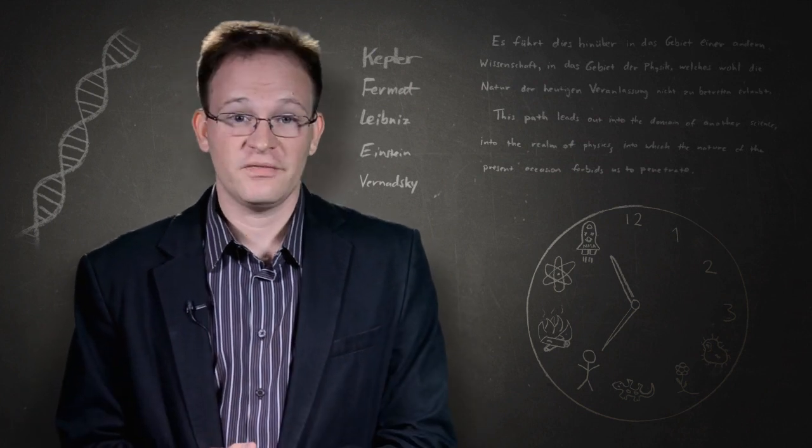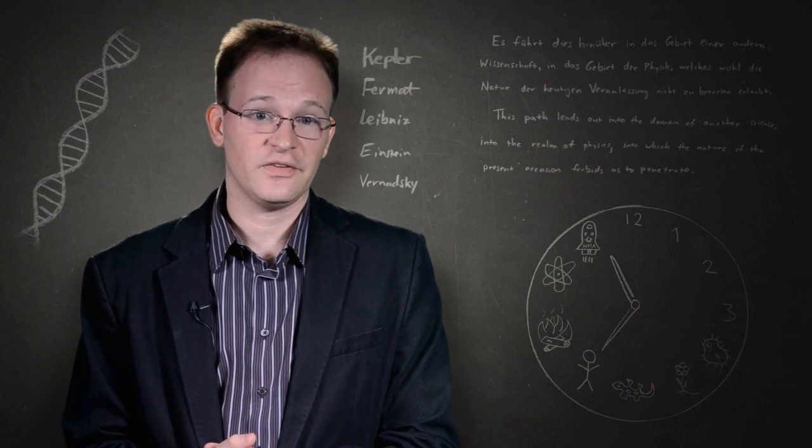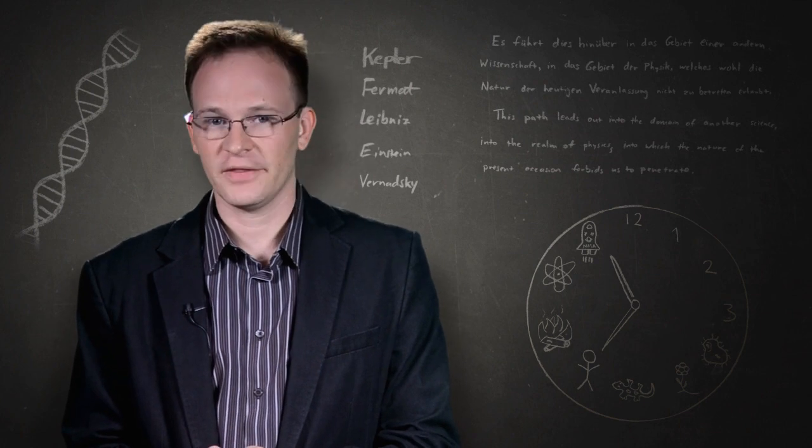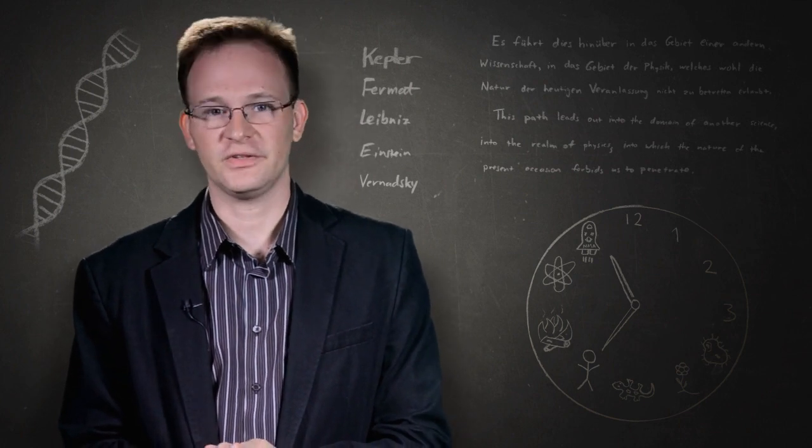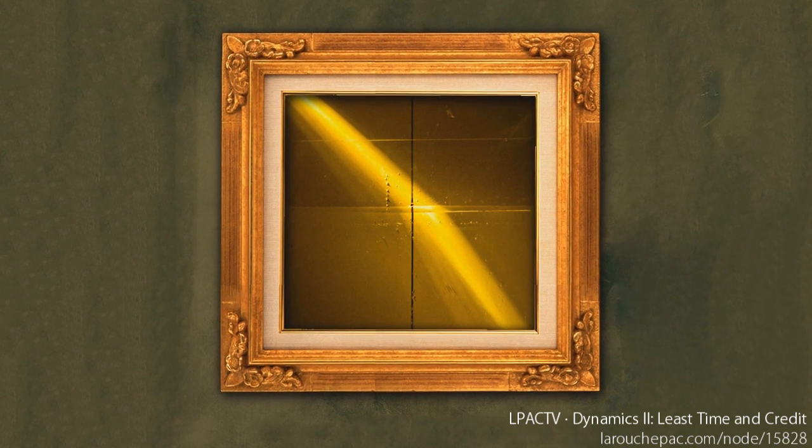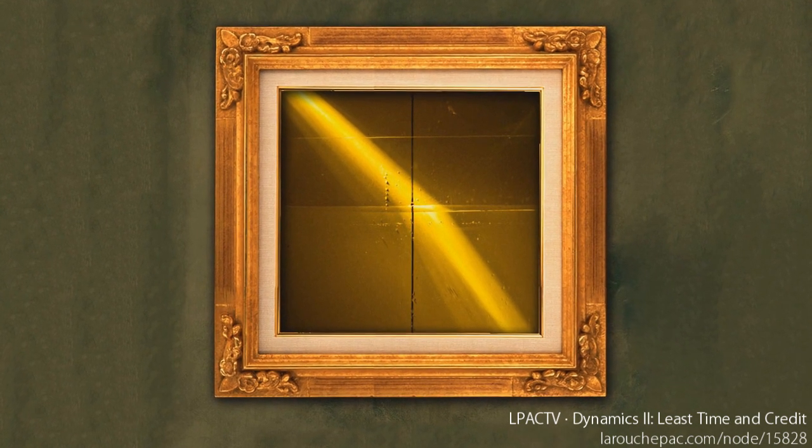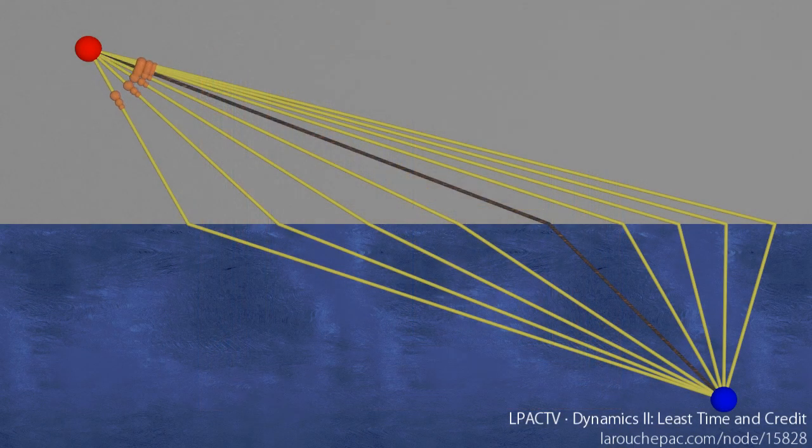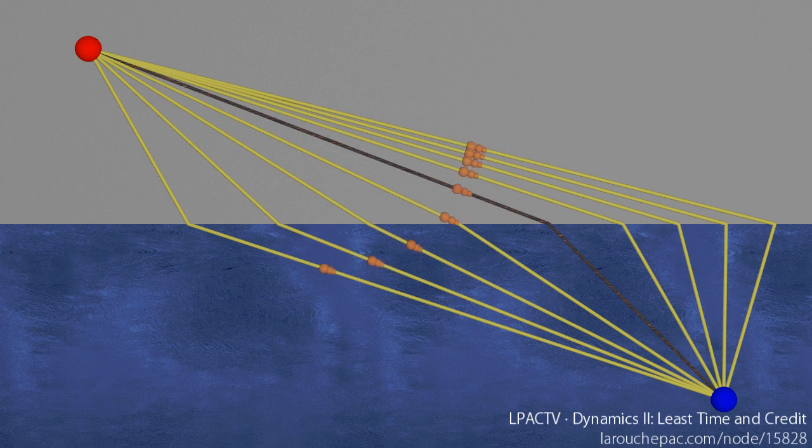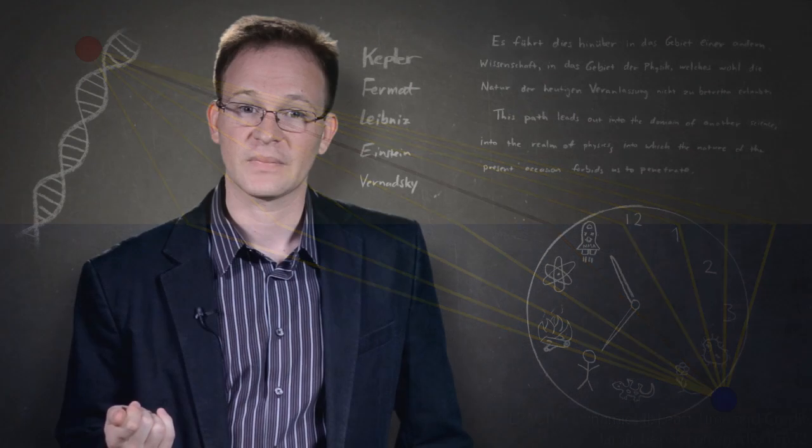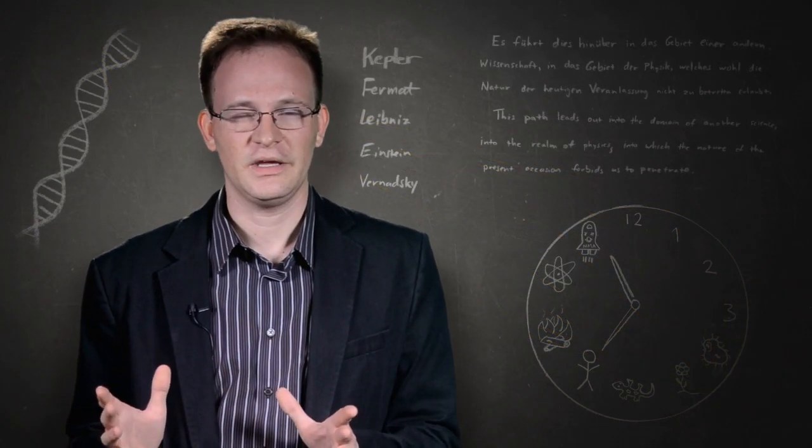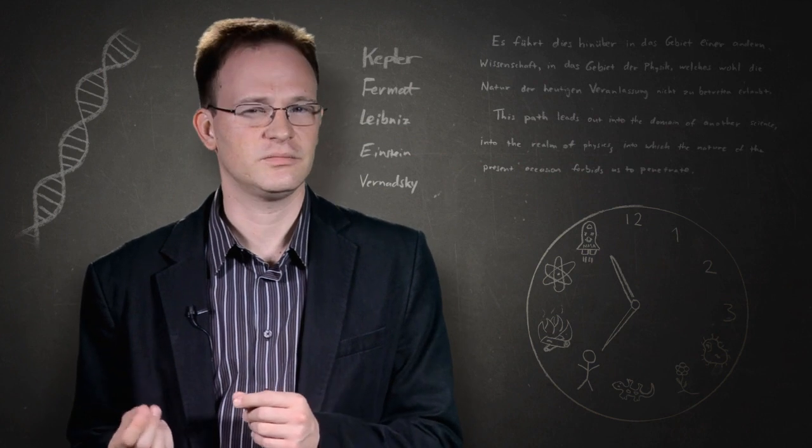Pierre de Fermat demonstrated the value of purpose as a scientific concept. The refractive bending of light as it moves from one material to another had puzzled thinkers for centuries. Why does light bend the way that it does when it enters water, for example? Fermat discovered the principle of least time. Among all the paths light might have taken from its origin to its destination, the paths it follows are those that make the journey the quickest. In this case, least time is nothing sense perceptual. It has the character of a motive, not an appearance.